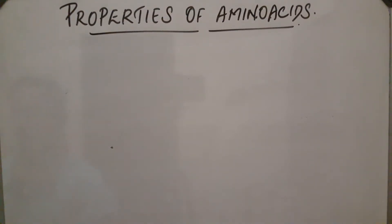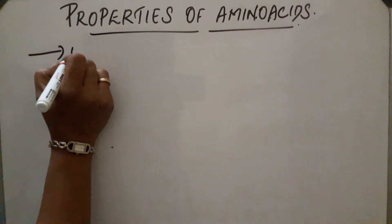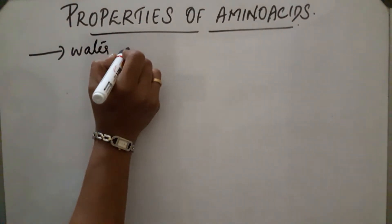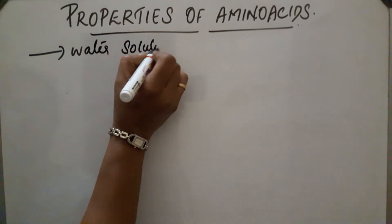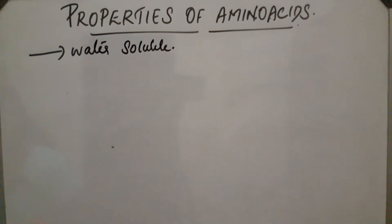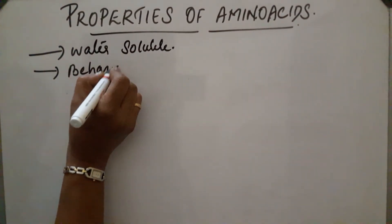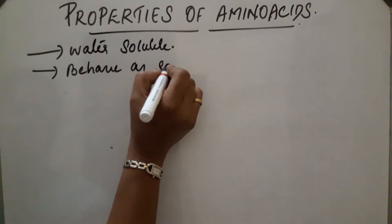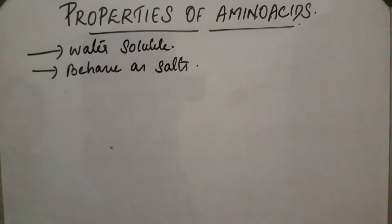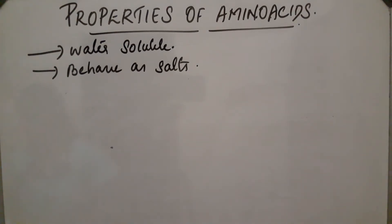Properties of amino acids. Amino acids are colorless crystalline solids and they are water soluble. They are high melting solids and they behave as salts, due to the presence of both amino group and acid group. This amino acid contains both amino group and acid group, so they behave as salts.